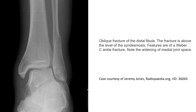Weber-C. This is an oblique fracture of the distal fibula above the level of the syndesmosis. Note the widening of the medial joint space. The key features of Weber-C ankle fracture classification are an oblique fracture of the distal fibula above the level of the syndesmosis with widening of the medial joint space.